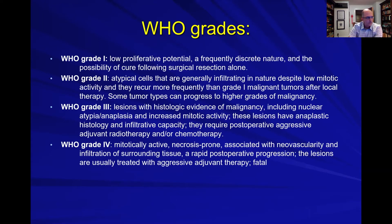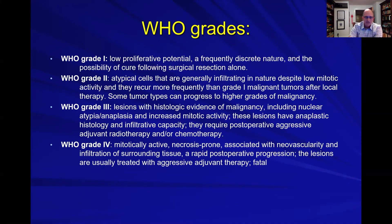That classification scheme defines tumor types and then defines them by WHO grade. The grading system is important — grades one through four. Grade one tumors have low proliferative potential, appear very discrete on MRI, and can potentially be cured with good surgical resection. Grade two tumors have more atypical cells and a more infiltrating nature, but still have low mitotic activity. They recur more frequently than grade one and some can progress to higher grades of malignancy.